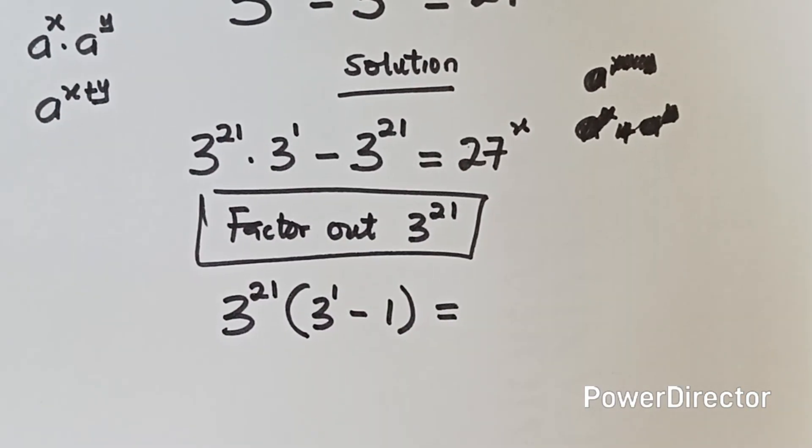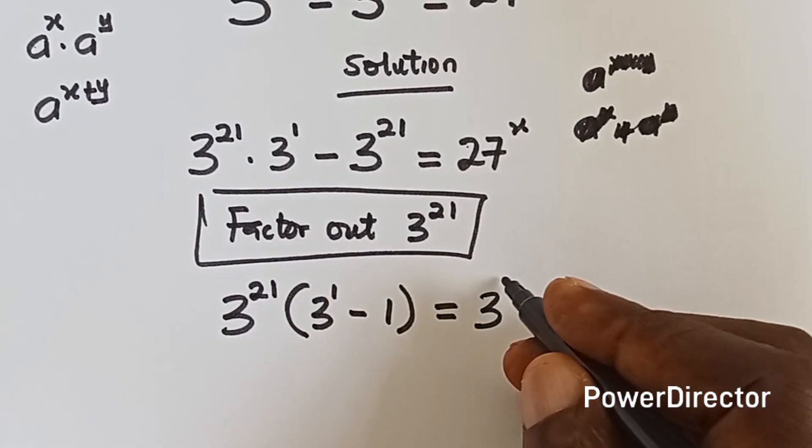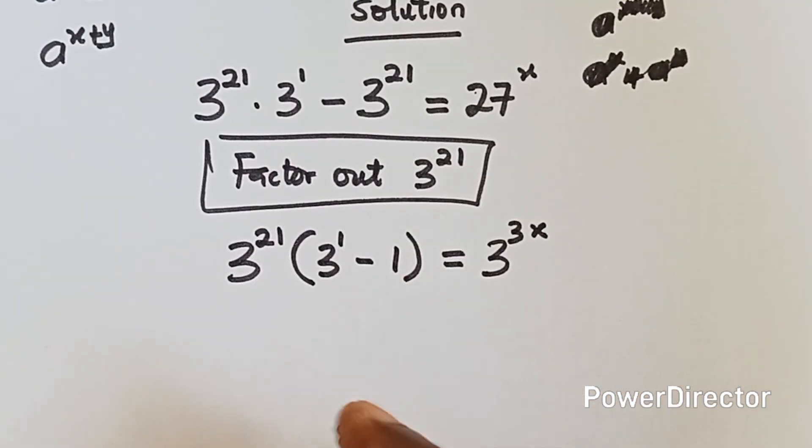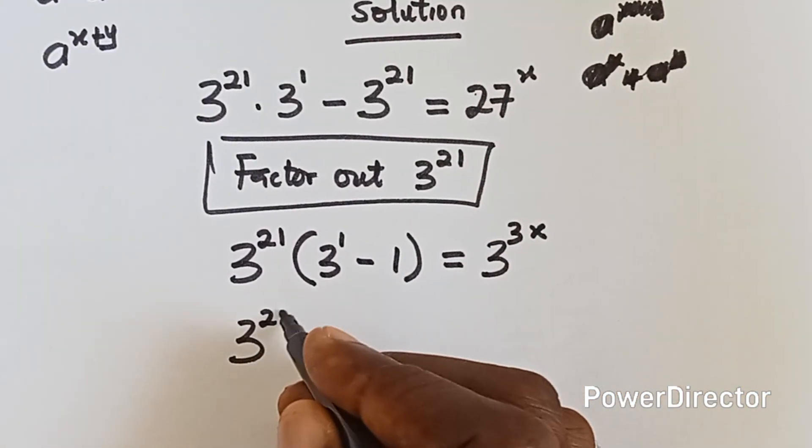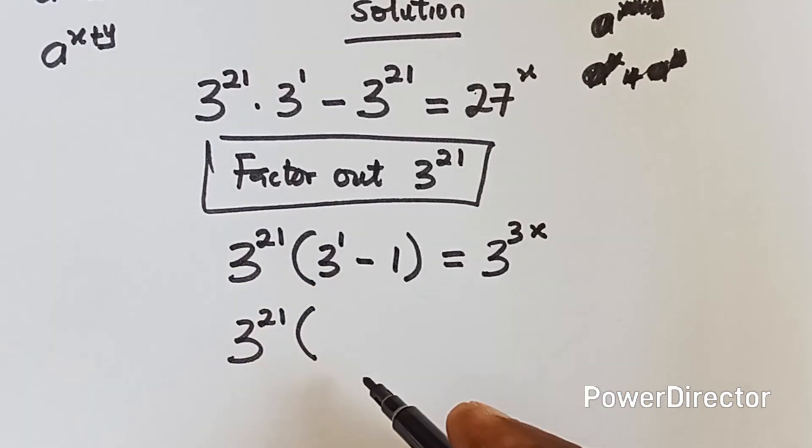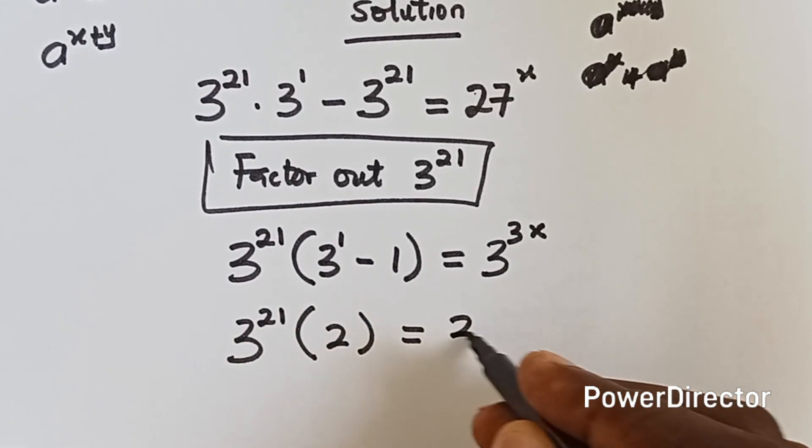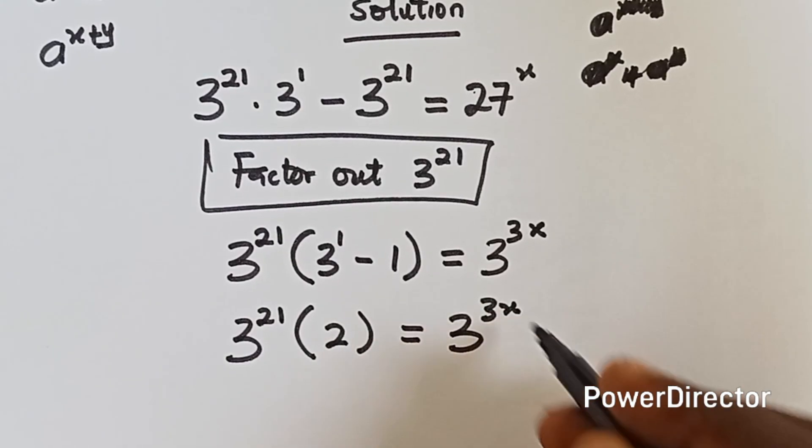27 is also multiple of 3. So we can write it as 3 raised to power 3, which will give us 27. Then we write the x. Now, we have 3 raised to power 21. 3 raised to power 1 is 3 minus 1 will give us 2. And then we have 3 raised to power 3x.